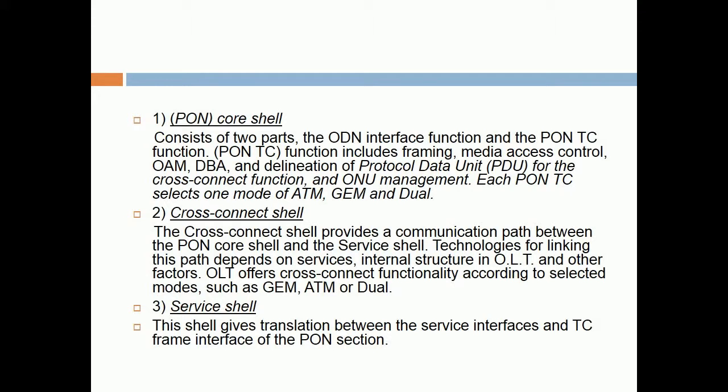Two, Cross Connect Shell: The Cross Connect Shell provides a communication path between the PAN Core Shell and the Service Shell. Technologies for linking this path depend on services, internal structure and OLT, and other factors. The OLT offers Cross Connect functionality according to selected modes such as GEM, ATM, or DUA. Three, Service Shell: This shell gives translation between the Service Interfaces and TC Frame Interface of the PAN section.